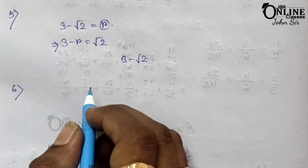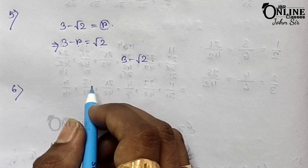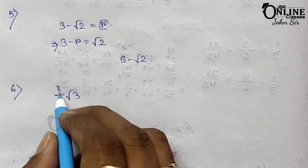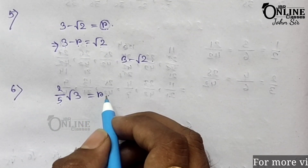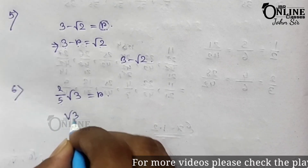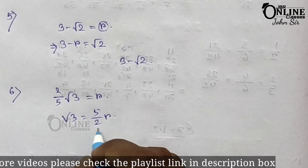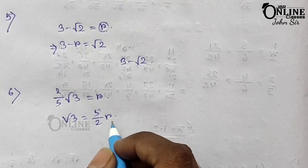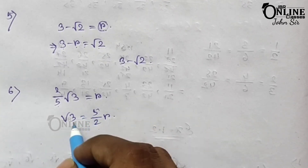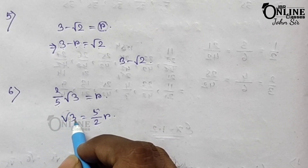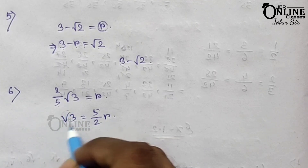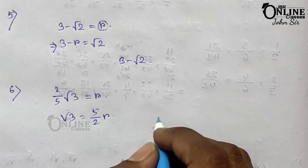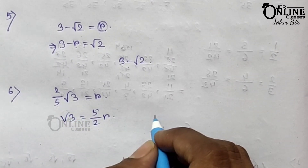Problem 6: prove that √3 is an irrational number — you can easily prove it. Now the second part: show that (2/5)√3 is an irrational number. Assume (2/5)√3 = r where r is rational. Then √3 = 5r/2. Since r is rational, 5r/2 is also rational, meaning √3 is rational. But this contradicts the fact that √3 is irrational. So our assumption is wrong and (2/5)√3 is an irrational number.